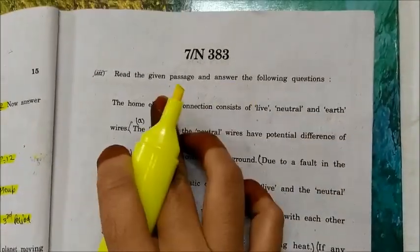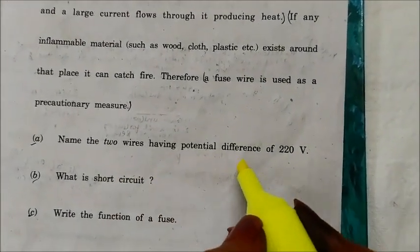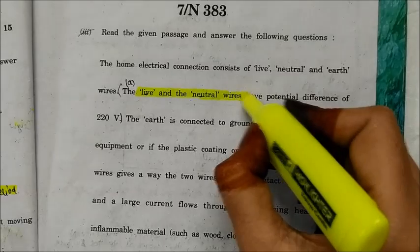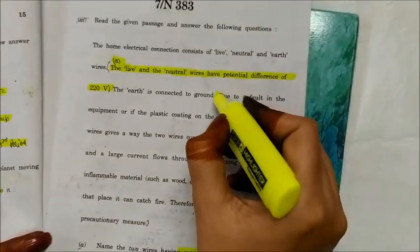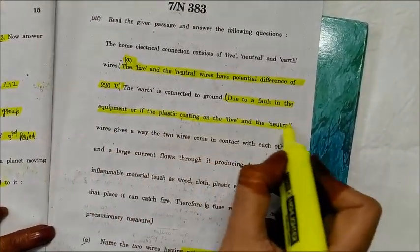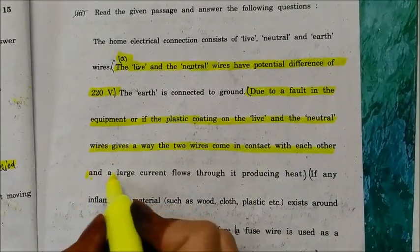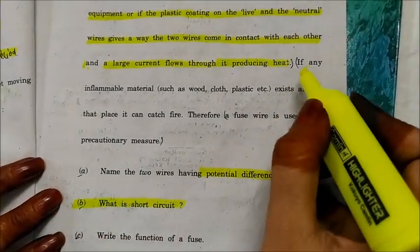Read the given passage and answer the questions. The two wires having a potential difference of 200 V are the live and neutral wires. A short circuit occurs due to a fault in the equipment, or if the plastic coating on the live and neutral wires gives way and the two wires come in contact, causing a large current that produces heat.